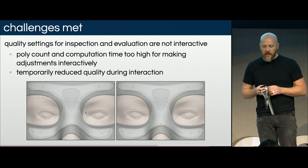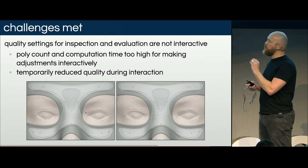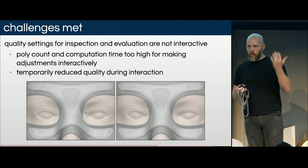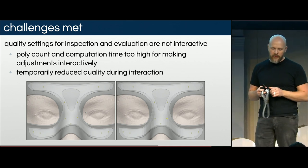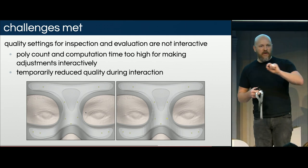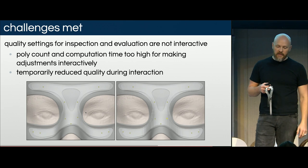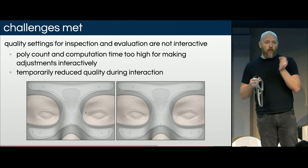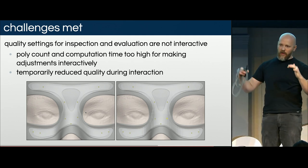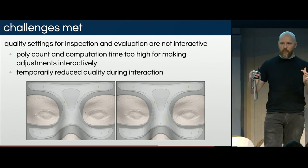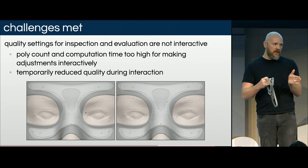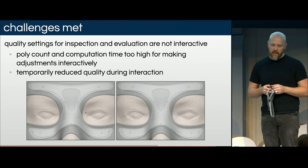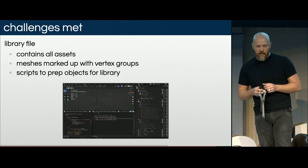Another challenge: the quality settings needed for inspection and evaluation are not interactive. With very high subdivision levels and lots of projection on high-geometry meshes, grabbing a control point and moving it interactively wasn't feasible. We worked around this by reducing the subdivision levels of less important elements when a control point is clicked, giving a good approximation of the final result while running at a much more interactive rate.